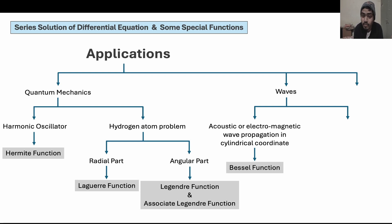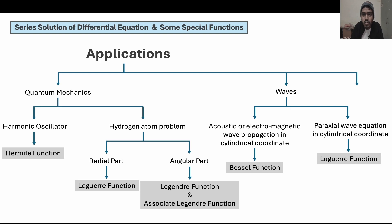In the case of acoustic or electromagnetic wave propagation in cylindrical coordinates, the Bessel function is the solution. For example, if you have a circular membrane — like a tabla — and you are generating different modes, the solution is a Bessel function; there will be Bessel modes. If you have the paraxial wave equation in cylindrical coordinates, then you will get the Laguerre function. You might have heard about Laguerre-Gaussian modes. So when you will be learning quantum mechanics, waves, and related topics, these special functions will be the solutions. There are also several other applications not mentioned here.